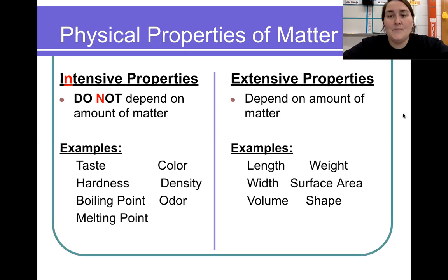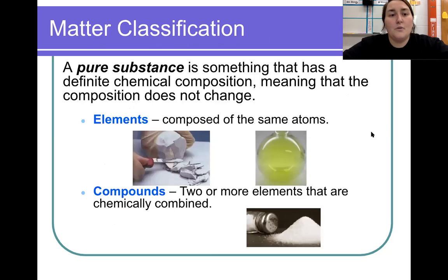That moves us into the classification of matter. Write this down: a pure substance is something that has a definite chemical composition—each piece has exactly the same composition and it does not change. There are two different kinds. The first one being the elements.